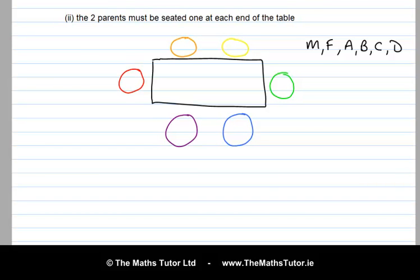So we always start with the slots that have a restriction on them. The two parents must be seated one at each end of the table. So the red seat and the green seat, we need to tackle these first. So how many choices do we have for the red seat? Either the mother or the father can sit at this seat. So we have two choices. So for example, the mother could be seated at the red seat. Now we need to deal with the green seat. Either the mother or the father must sit here. The mother is already seated, so it's got to be the father. We have one choice.